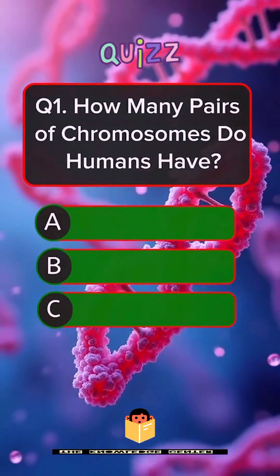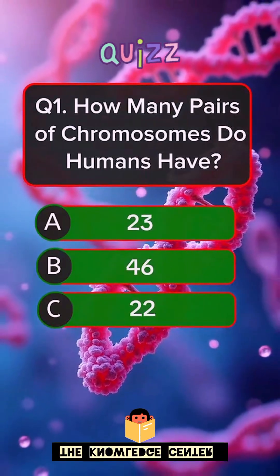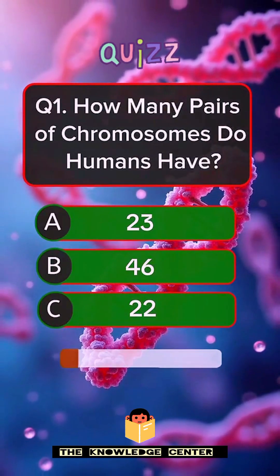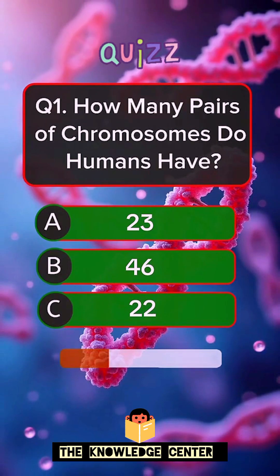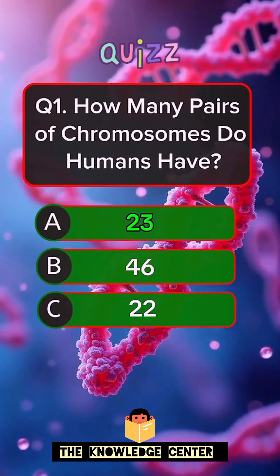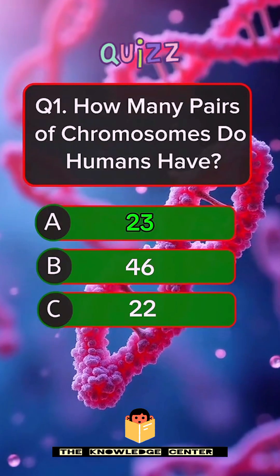Question 1. How many pairs of chromosomes do humans have? Answer A. 23.